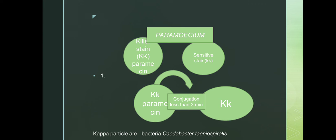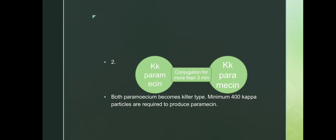Now what is the second case? If we increase the time of conjugation of the Paramecium, we find that both the Paramecium become killer strain and both have heterozygous condition, that is one capital allele and one small allele, capital K small k.